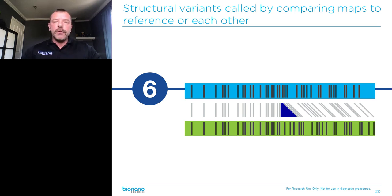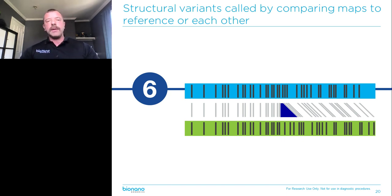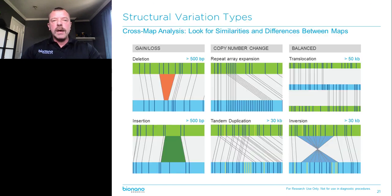These de novo assembled maps are then aligned to the reference genome of your choice — HG19 or HG38 for human genomes, or any reference for other organisms. If the reference is shown in green, you can see that the left half of that map aligns perfectly, the right half aligns as well, but in the middle there's a deletion — a number of labels are missing and the other labels are pushed closer together. Our software will call that automatically.